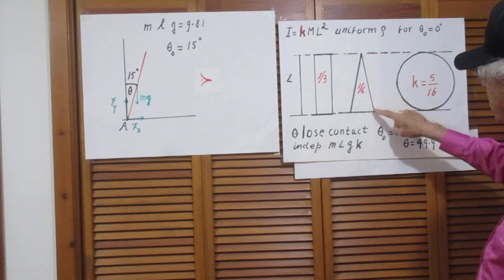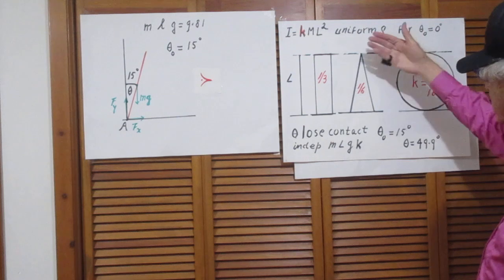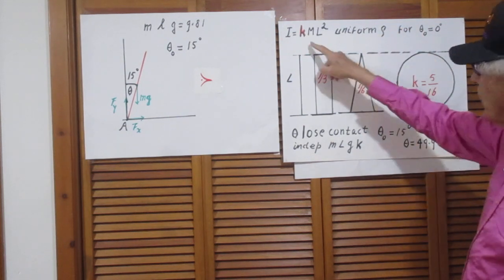If you have a triangular shaped piece of wood, a slice of wood, then k is one sixth.